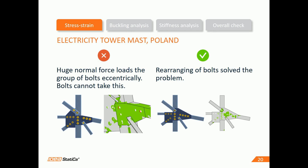Let's look at some examples. First, this joint in an electricity tower mast. The original design was not safe because of the wrong topology of bolts. Rearranging the bolts solved the problem.